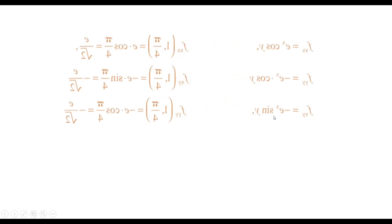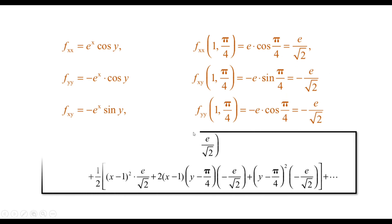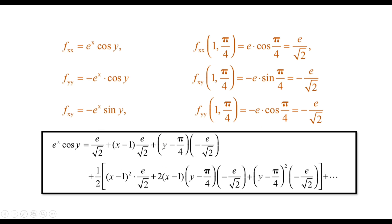Proceeding in this way for the second-order partial derivatives, we evaluate them at the point (1, π/4). We get those results and substitute all values into the revised expansion. After substitution, the Taylor series expansion of e^x · cos(y) is: e/√2 + (x−1)·(e/√2) + (y−π/4)·(−e/√2) + second-order terms, and so on.